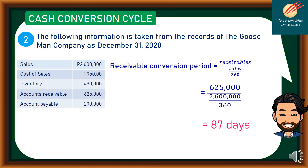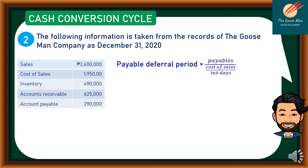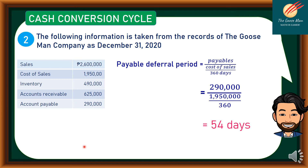Now we can determine the payable deferral period, which equals payables divided by cost of sales, all over 360. The payables are 290,000 pesos and the cost of sales is 1,950,000 pesos. Applying the formula, we come up with 54 days, rounded to the nearest full number. So the payable deferral period equals 54 days.